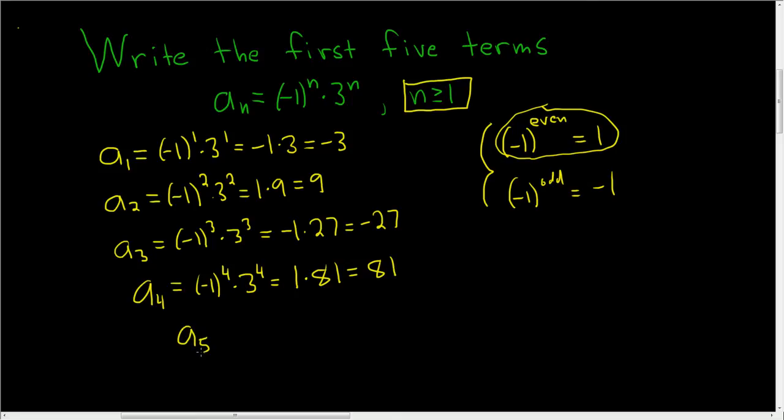A sub 5, just replace all of the n's with 5's. So you get negative 1 to the 5th power times 3 to the 5th power. 5 is odd, so negative 1 to the 5th power is negative 1. And 3 to the 5th is 243. So we end up with negative 243.